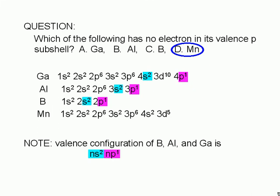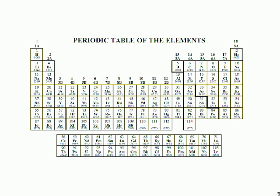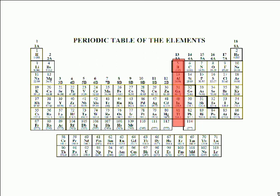This is generally true for atoms belonging to the same column in the periodic table. Boron, aluminum, gallium, and the other elements in group 3a, or column 13, all have 1 electron in their valence p subshell. Their valence p subshell configuration is p1.